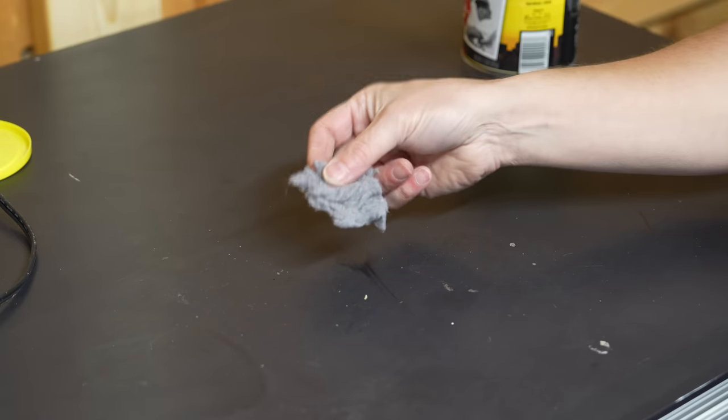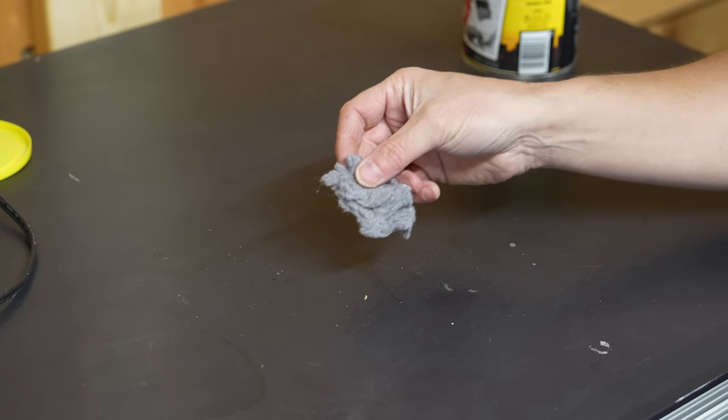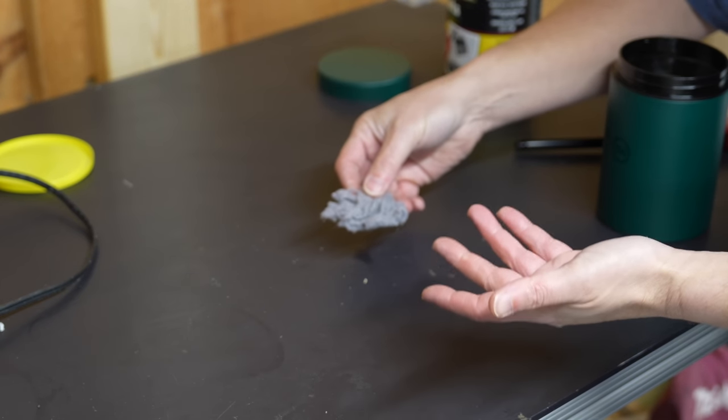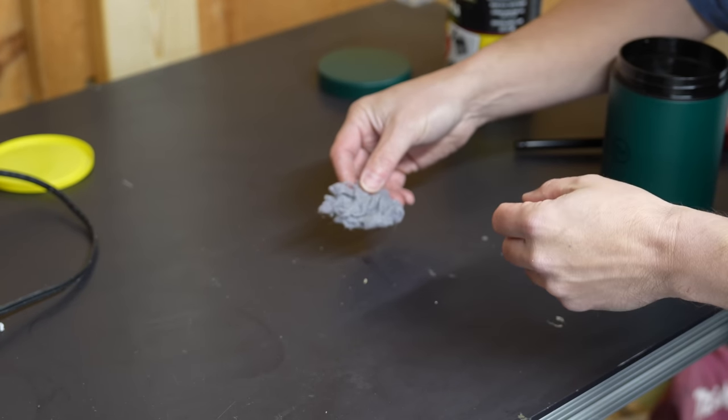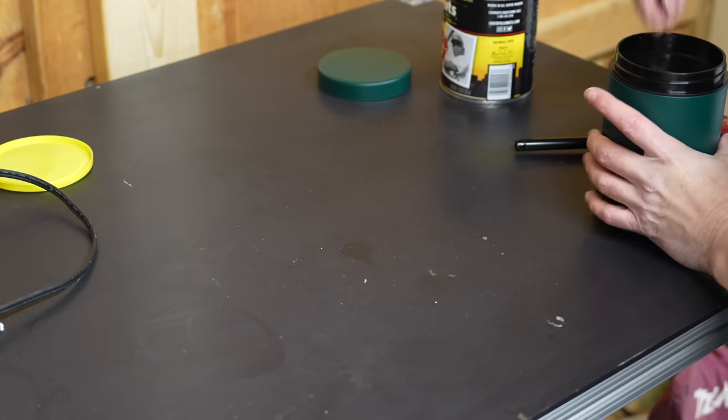What we want to do is take the flammability of our dryer lint, turn it into something that can burn a lot longer and help us get our fire started. Think about your candles in your house. By themselves they just have a wick, but when you surround them with wax, they're able to burn for hours on end. We're going to use that idea, but we're going to do it in a much easier way.